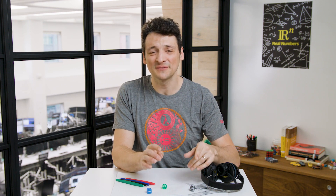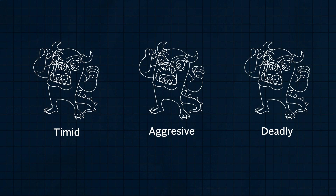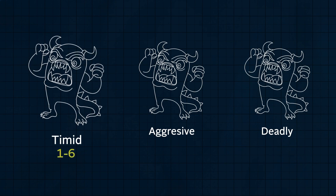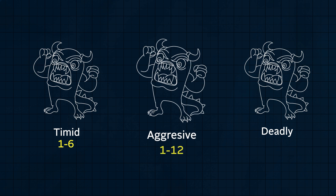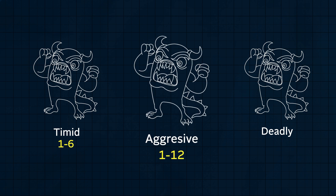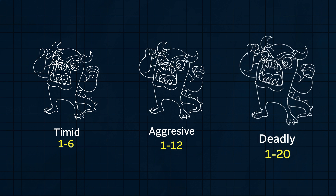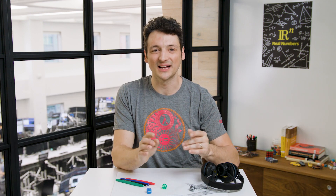You are exploring a haunted forest in a video game. The monsters in the haunted forest are of three difficulty classes, each equally likely to be encountered: timid, aggressive, and deadly. When a timid monster attacks, it deals between 1 and 6 damage uniformly — that is, each outcome has equal probability, one-sixth in this case. An aggressive monster deals between 1 and 12 damage uniformly, and a deadly monster deals between 1 and 20 damage uniformly. However, the different difficulty class monsters all look identical.